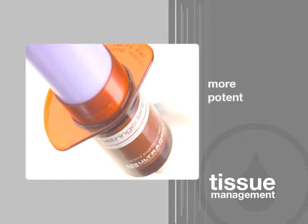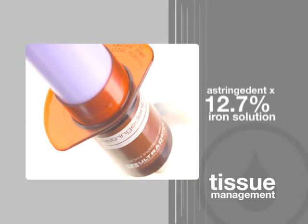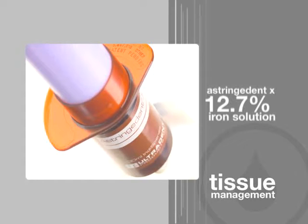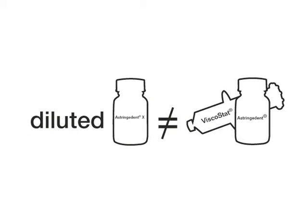Astringident X is a more potent formulation and is used when a stronger hemostatic is required or where attaining a certain quality of hemostasis may be more challenging. It's not as kind to tissues as Viscostat and Astringident, but is kinder than other iron subsulfate solutions. However, diluted Astringident X does not equal Viscostat or Astringident.